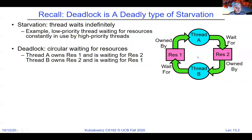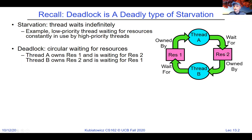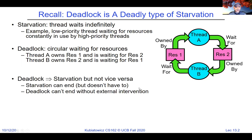Here was the picture we used: thread A is waiting to acquire resource two while already owning resource one, and thread B is waiting to acquire resource one but already owns resource two. This is the circular waiting we talked about. Deadlock is a type of starvation, but not vice versa.